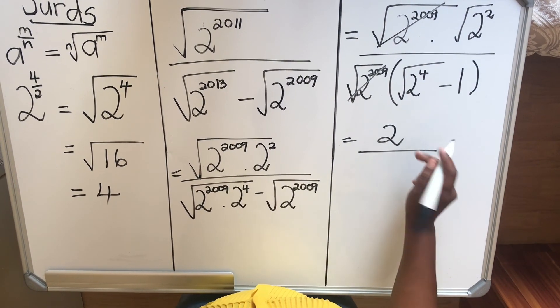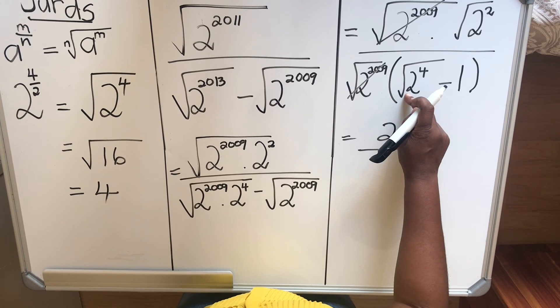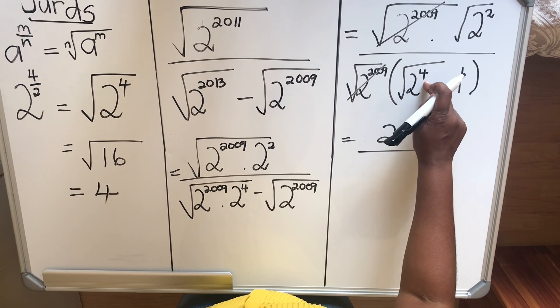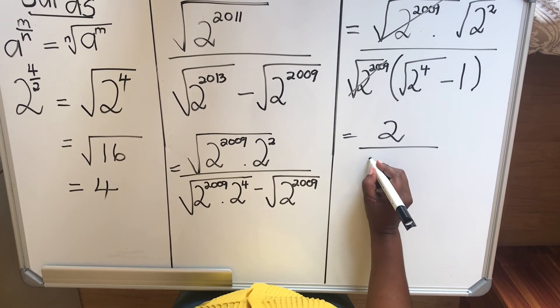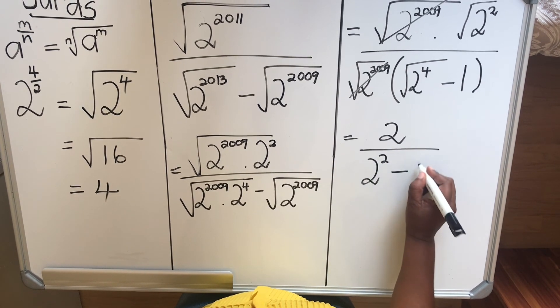Now that will cancel that, and then in the numerator I'll be left with 2. Square root of 4 is 2, divided by square root of 2 to the power 4. If you divide the 4 by 2, I'll get 2 to the power 2 minus 1.